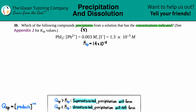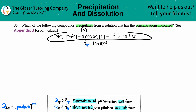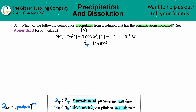To determine if a precipitate forms, we need to find the Qsp. Think back to chapter 13 and reaction quotients — a Q value is just like a K value but at any point in time during the reaction. We compare Qsp to the known Ksp value to decide if a precipitate will form.